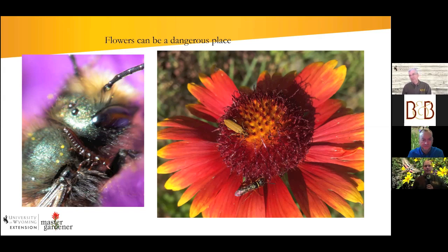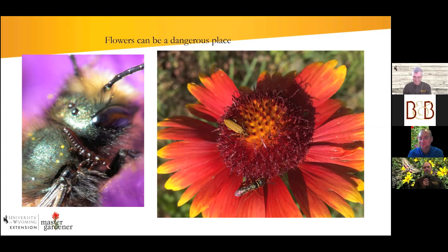Leaf cutter bees make nest cells in series in twigs or stumps — one cell, then another in front of it, working their way back out the hole. Interestingly, bees can control what sex their offspring will be. They often put females in the back of the nest and males at the very front — so if a predator or parasitoid comes, it can't reach the females. Females also get more food. The males come out first and aren't in the way when the females start emerging.